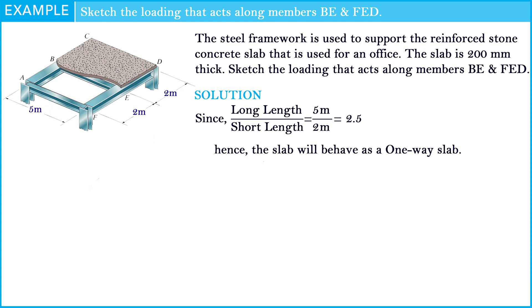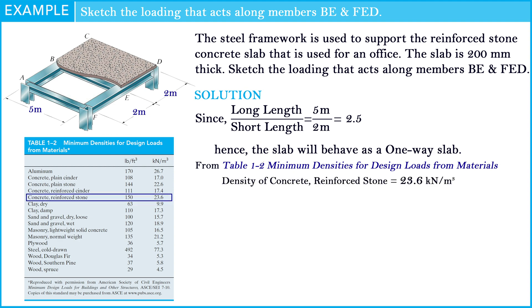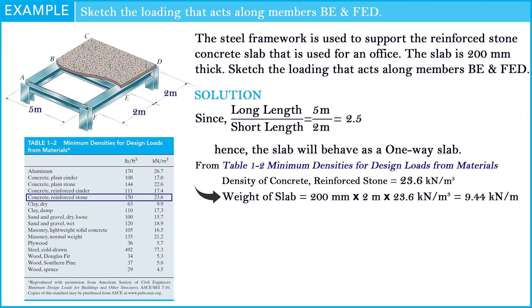The second step, we need to find the loads acting on the slab. As we know, the slab is used for an office with 200 mm thick. Look at table 1.2, minimum densities for design loads from materials — the density of reinforced stone concrete is equal to 23.6 kN per cubic meter. So the weight of the 200 mm slab is equal to 9.44 kN per meter.